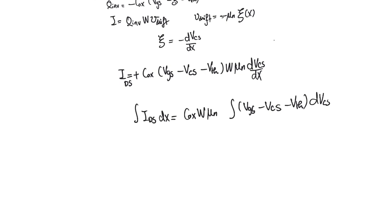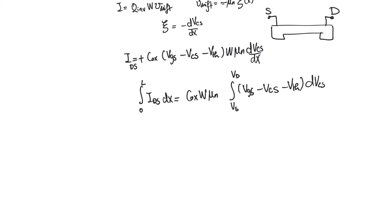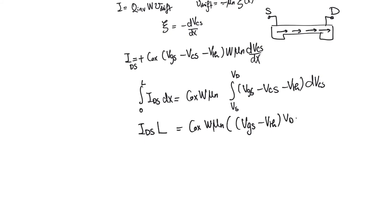We integrate from the source to the drain, i.e., from x = 0 to x = L, and VCS from 0 to VDS. The current IDS is constant because in steady state current must be equal at every point in the channel; otherwise charge would accumulate, which violates current continuity — there is no generation or annihilation of charges in the channel. Integrating both sides yields: IDS·L = C_oxide·W·μ_n·[(VGS − V_threshold)·VDS − VDS²/2].